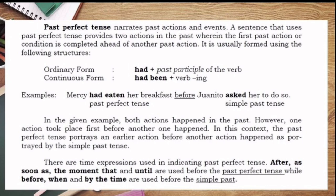Past perfect tense narrates past actions and events. A sentence that uses past perfect tense provides two actions in the past wherein the first past action or condition is completed ahead of another past action. It is usually formed using 'had' plus the past participle form of the verb. For example: 'Mary had eaten her breakfast before Juanito asked her to do so.' Both actions happened in the past, but one took place before the other. Time expressions 'after,' 'as soon as,' 'the moment that,' and 'until' are used before the past perfect tense.